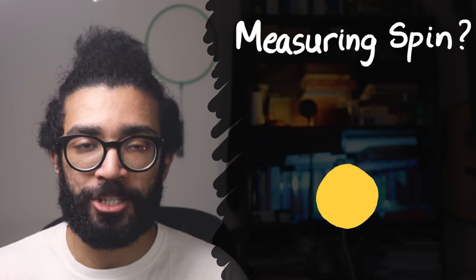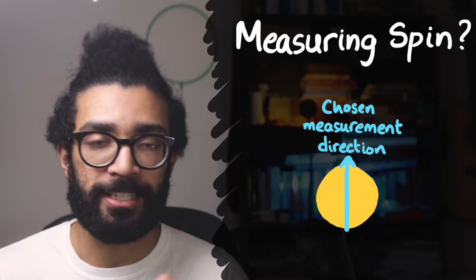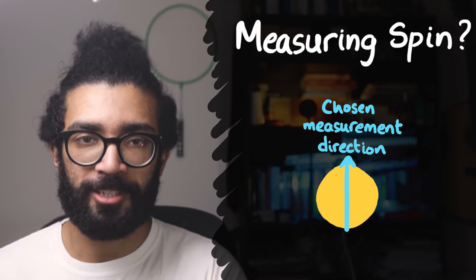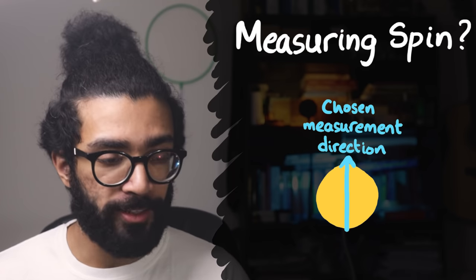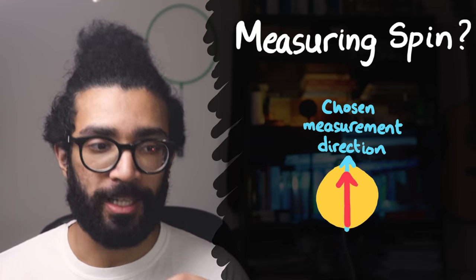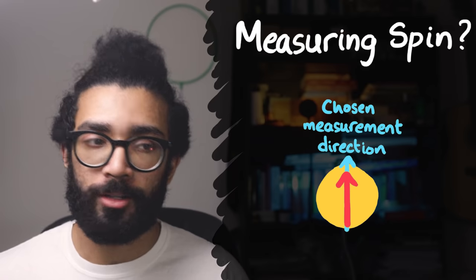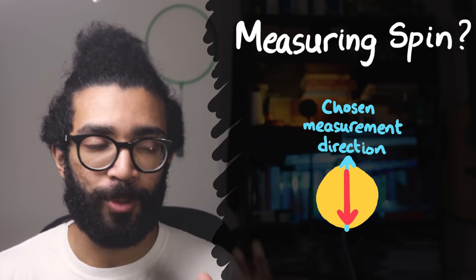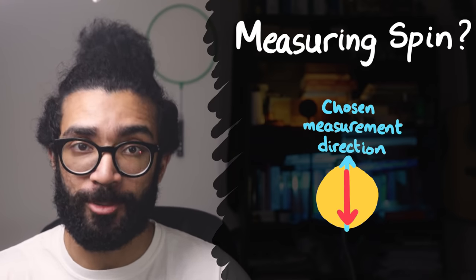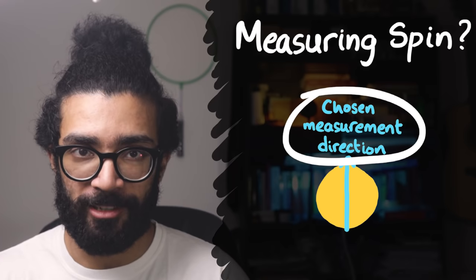But so let's imagine that we choose to measure the spin of our electron in this direction, say. The two possible results that we can get from this experiment is either we find our electron spin aligned with our measurement axis or anti-aligned. Importantly, though, we're just measuring the component of our electron spin along the chosen measurement direction.